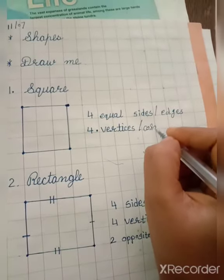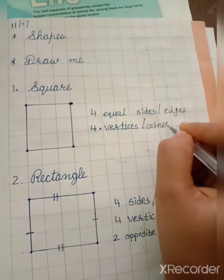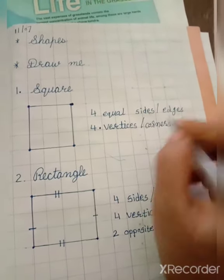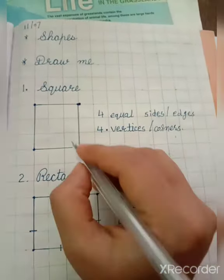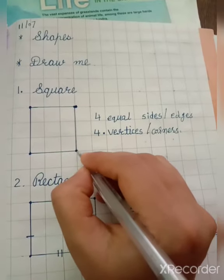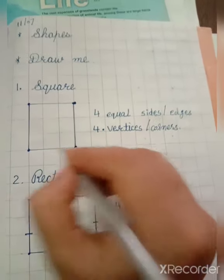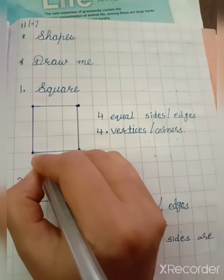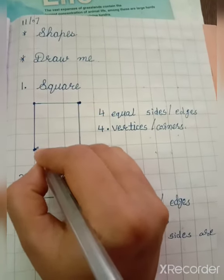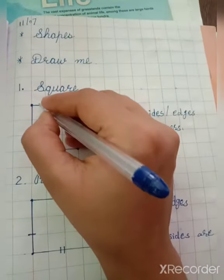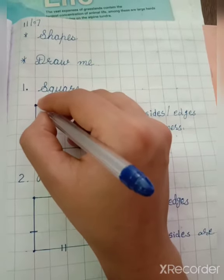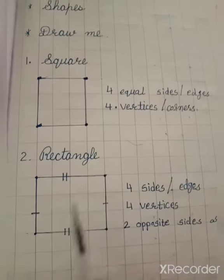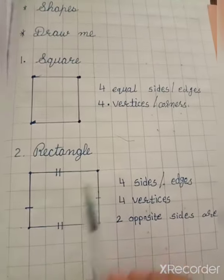A square also has four vertices — vertices, or corners as we call it in simple language. So write: four vertices or four corners. Now we move on to rectangle.